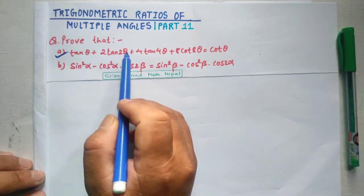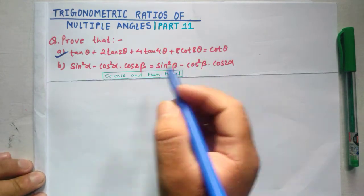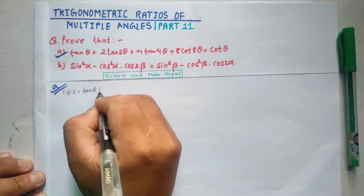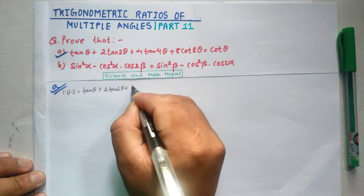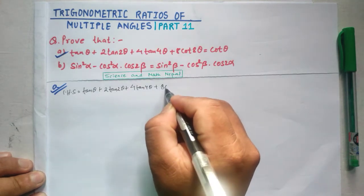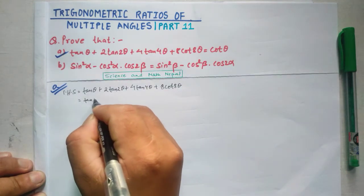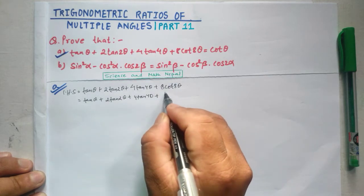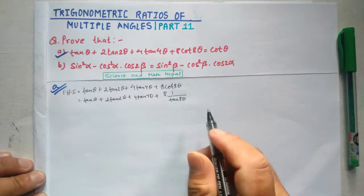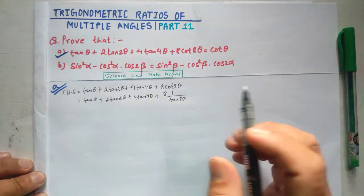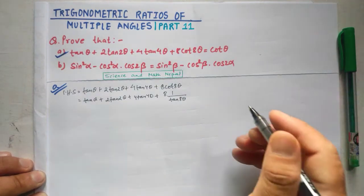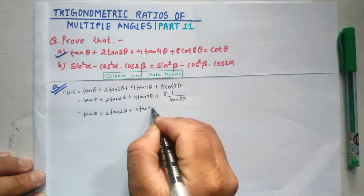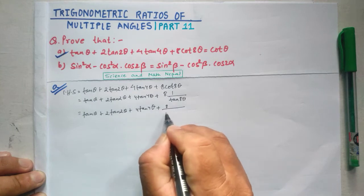Prove that tan θ plus 2 tan 2θ plus 4 tan 4θ plus 8 cot 8θ equals cot θ. We use the reciprocal relation: cot 8θ equals 1 divided by tan 8θ. So the expression becomes tan θ plus 2 tan 2θ plus 4 tan 4θ plus 8 divided by tan 8θ.